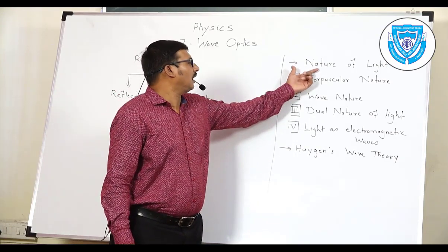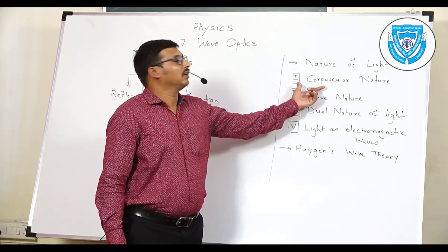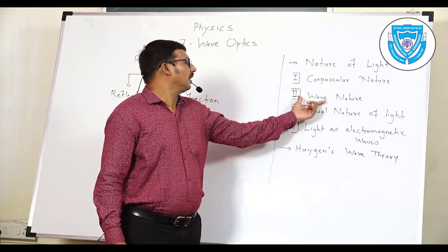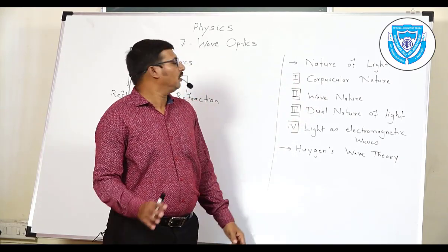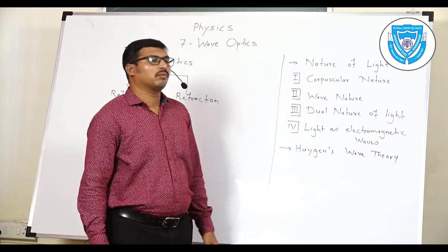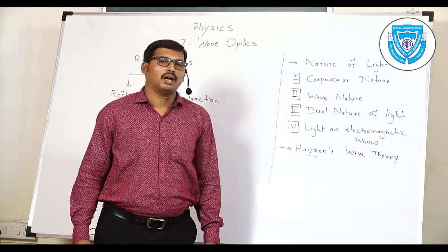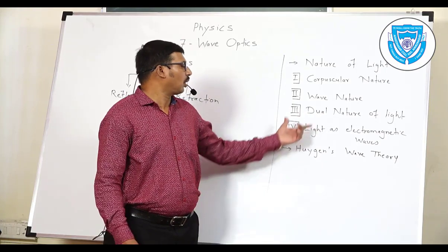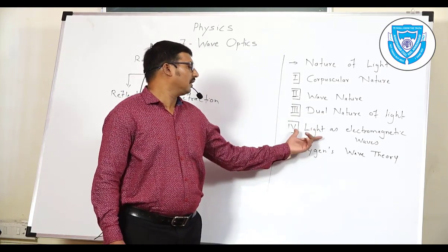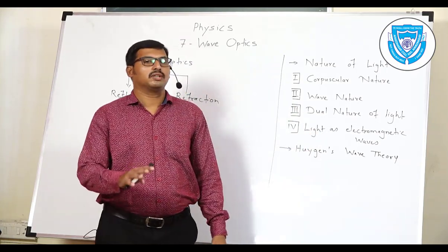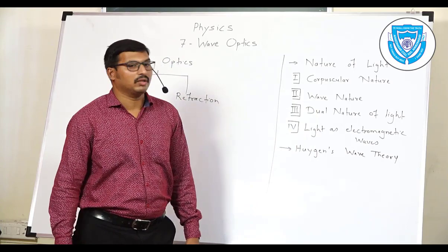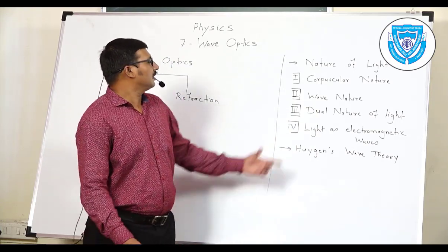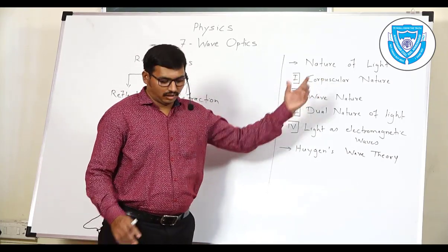The first theory is the corpuscular nature, given by Newton. The second is the wave nature, given first by Huygens. The third is the dual nature of light, which is a small topic. And the fourth is light as electromagnetic waves. Let us begin with the first one — the corpuscular nature.